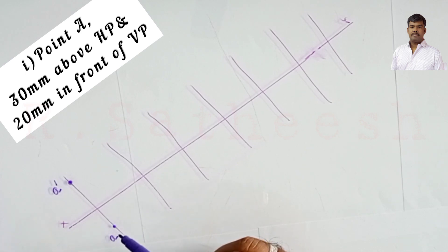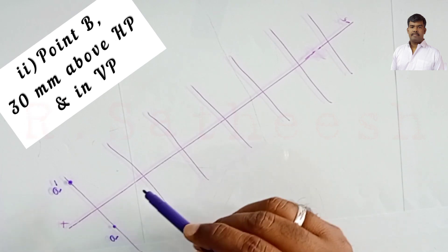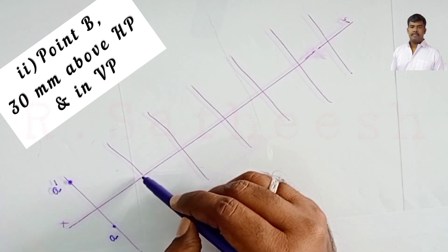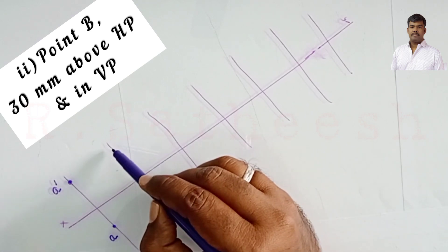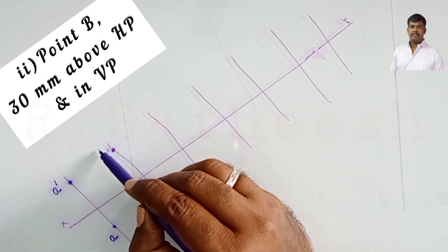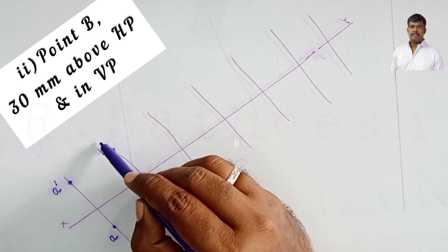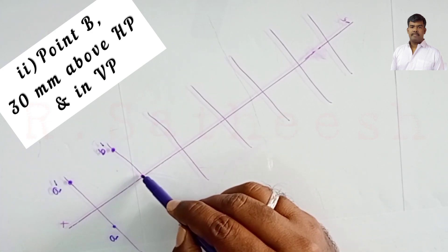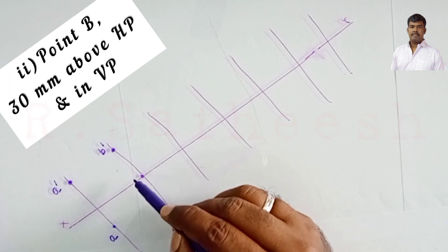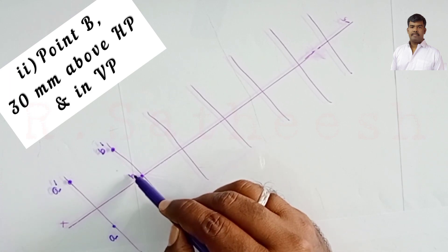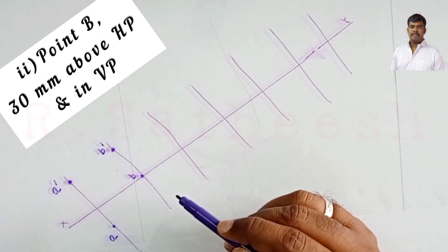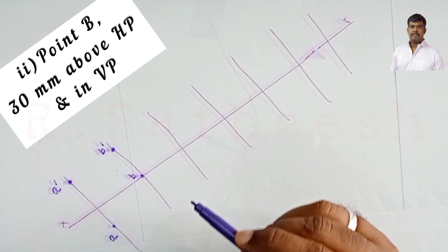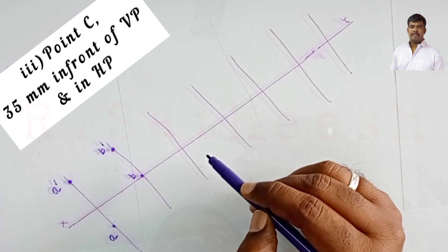Point B is 30 mm above HP and in VP. So the front view B dash is 30 mm above XY. Since B lies in VP, the top view b lies on XY itself.